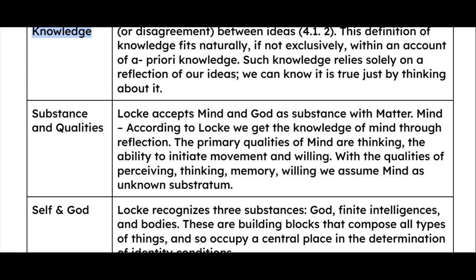Now let's see substance and qualities. Locke has accepted mind and God as a substance, and he also accepted matter. Here we can see some kind of rationalist element because mind is included, but mostly the focus is on empiricism. According to Locke, we get the knowledge of mind through reflection, because we cannot see what is there in the mind. So we reflect through ideas and get knowledge through our ideas.